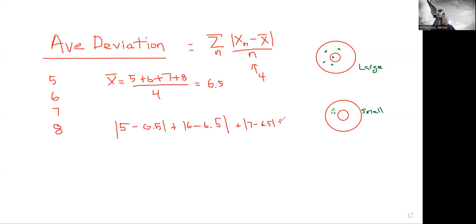Plus 8 minus 6.5. Minus 6.5. Absolute value of that. Divided by the number of measurements, which is 4.